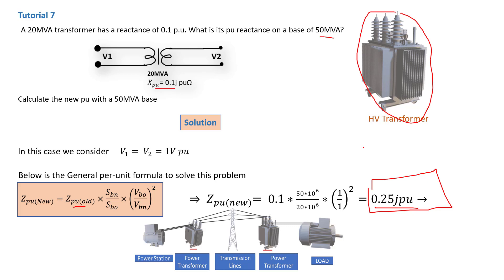This is important when we want to be able to determine what is the maximum current or the maximum fault current that can flow on the transmission line. For instance, let's say this 0.25j per unit is this transformer here, and we may have another per unit value right here, and this is a transmission line.